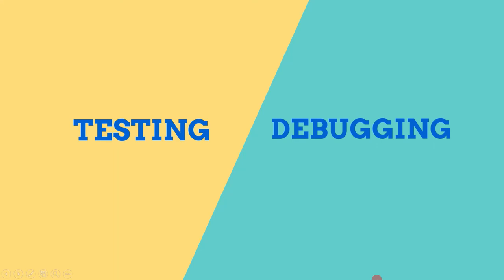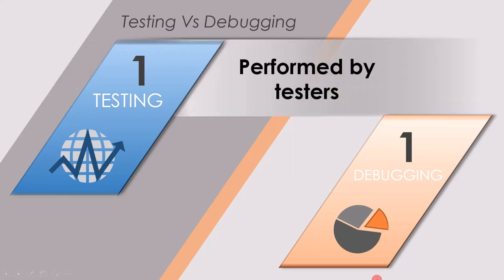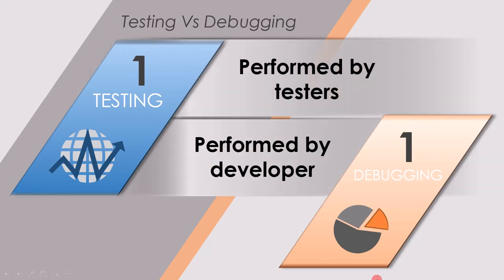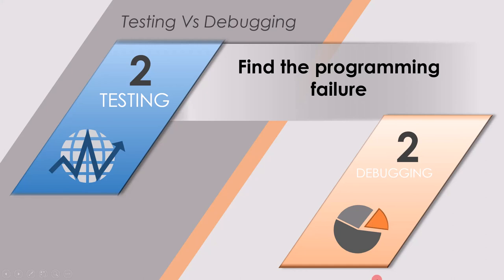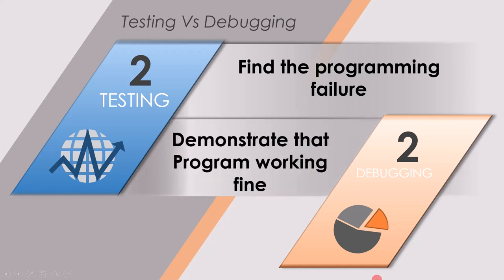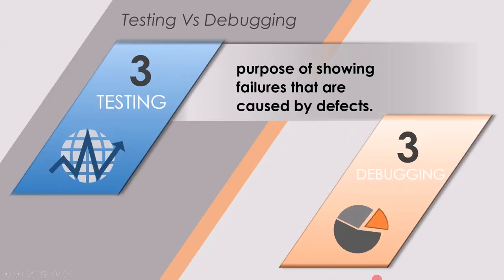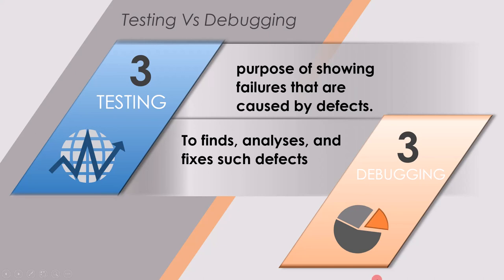Before we end this topic, let's have a look into the difference between testing and debugging. The first difference is that testing is performed by a tester and debugging is performed by a developer. The second difference is that testing finds the programming failure, whereas debugging demonstrates that the program is working fine or shows the root cause of the defect. The last difference is that testing is done with the purpose of showing failures caused by defects, whereas debugging is the development activity that finds, analyzes, and fixes such defects.